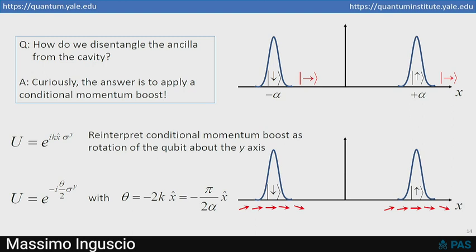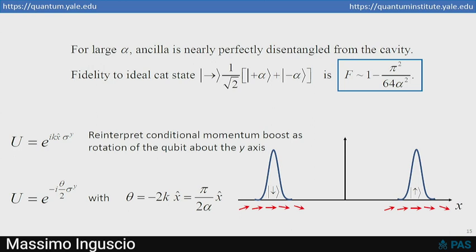But if you choose the angle, the coefficient to be minus pi over 2 alpha times the position, then for the position plus alpha in the center of the right-hand peak in the lower right, you see you get exactly the correct rotation angle. And if x is minus alpha, you get exactly the right rotation angle. But because x is quantum, you have quantum uncertainty in x, and so for around that Gaussian peak, you get small over and under rotation. So it's not a perfect disentanglement, but it's actually pretty good at least if alpha is large. The fidelity to the ideal cat state is given in that expression in the blue box.